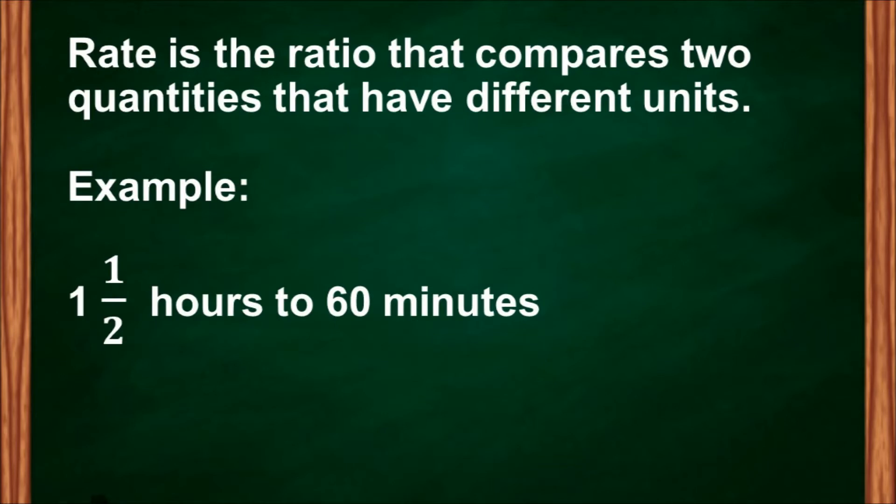Rate is the ratio that compares two quantities that have different units. For example, 1 and a half hours to 60 minutes. Therefore, hours and minutes are different units, so it is called rate.